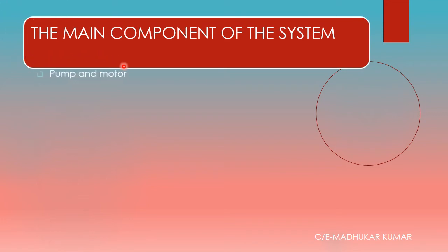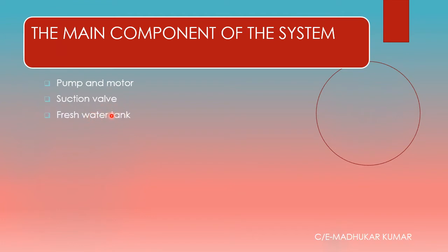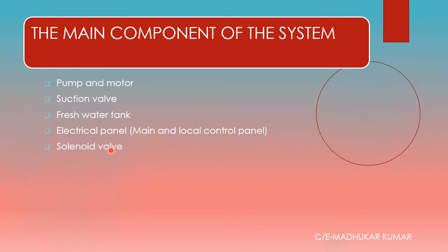The main components of the hypermist system include the pump and motor, suction valve, fresh water tank, and electrical main and local control panels. The local panel is generally in the steering compartment, the pump installation and activation system are in the fire control station, and repeater panels are in the bridge and engine control room. Each individual zone is attached with a solenoid valve.